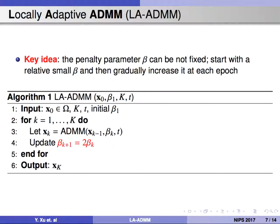So we want to develop novel ADMM algorithms with a new adaptive scheme to update the penalty parameter. The key idea is to start with a relatively small beta and then gradually increase it at each stage. The updating steps are presented in algorithm 1, which we call LA-ADMM.